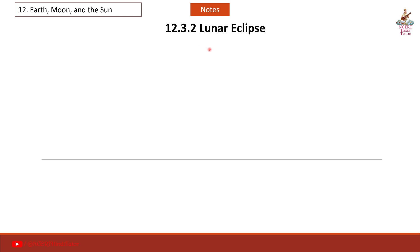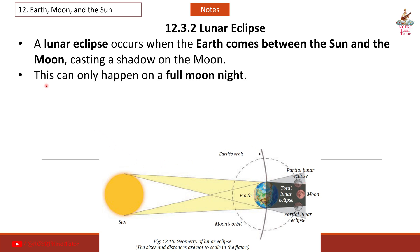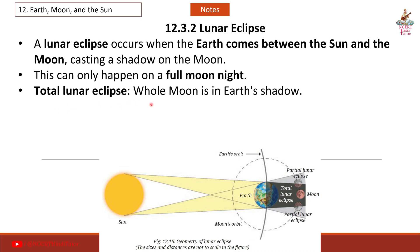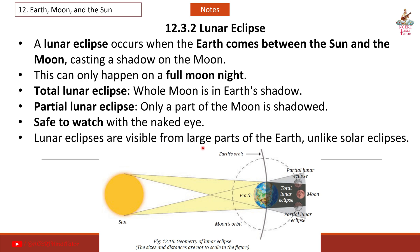12.3.2 Lunar Eclipse. A lunar eclipse occurs when the Earth comes between the sun and the moon, casting a shadow on the moon. This can only happen on a full moon night. Total lunar eclipse: the whole moon is in Earth's shadow. Partial lunar eclipse: only a part of the moon is shadowed — safe to watch with the naked eye. Lunar eclipses are visible from large parts of the Earth, unlike solar eclipses.